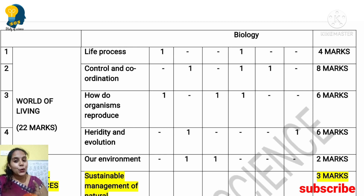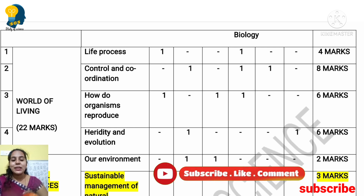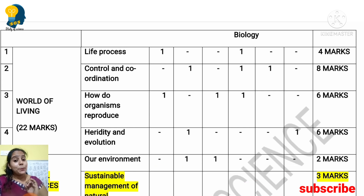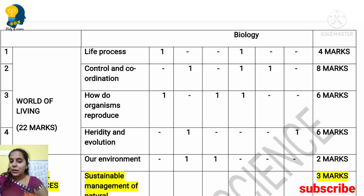Control and Coordination carries 8 marks. How Do Organisms Reproduce carries 6 marks. Heredity and Evolution carries 6 marks — from this lesson, Punnett square-based questions, principles of inheritance, evolution, and artificial vegetation may be asked. It is a very important lesson.